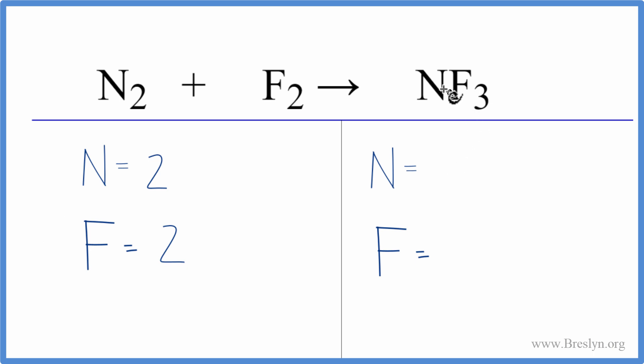On the product side of the equation, we have one nitrogen and three fluorine. Let's balance the nitrogens first and just see how that does. This might get this to an even number, which would help us.